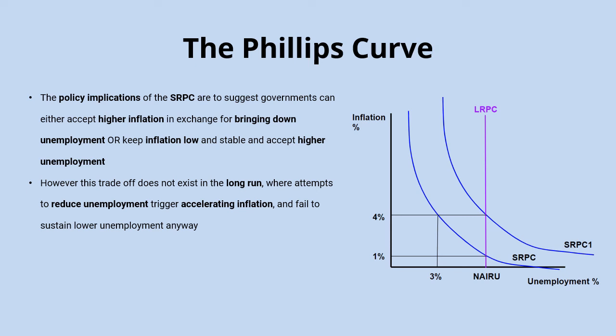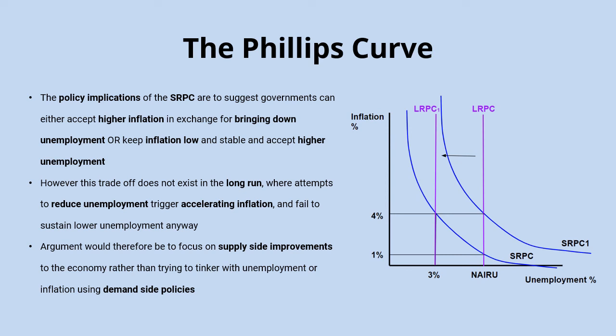The argument of the long-run Phillips curve is therefore to focus on supply-side improvements to the economy, rather than trying to tinker with unemployment or inflation using demand-side policies. The right shift of the long-run aggregate supply curve that would then come about will be reflected in a left shift of the long-run Phillips curve and a new, lower natural rate of unemployment.